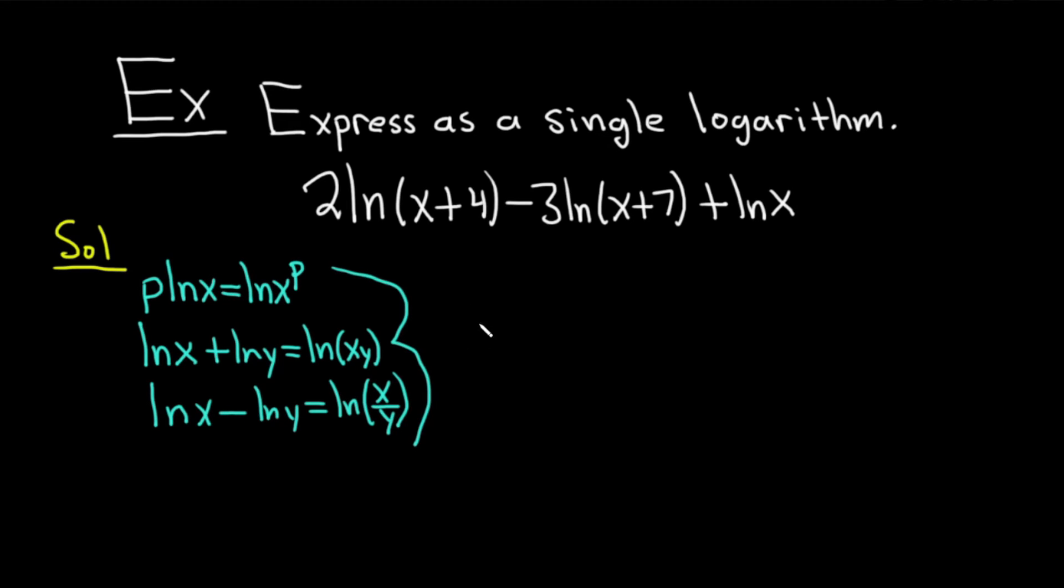Okay, let's go ahead and work out this problem. So you notice right away that you have a 2 in front of the natural log of x+4 and a minus 3 in front of the natural log of x+7. So before we apply our quotient rule, we have to bring those numbers up using the power rule. So this entire piece, our 2ln(x+4) - 3ln(x+7) + ln(x) is equal to ln(x+4)^2